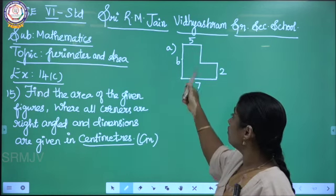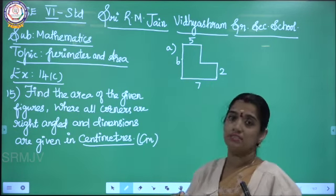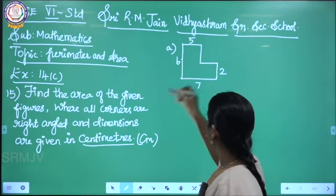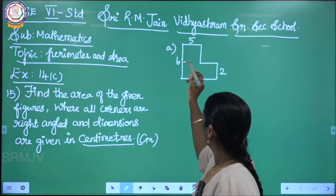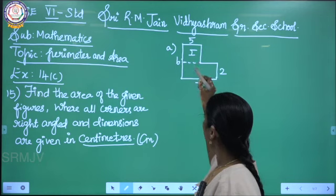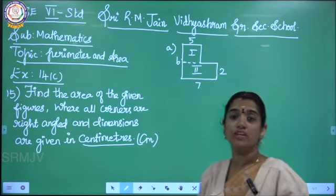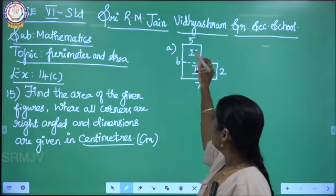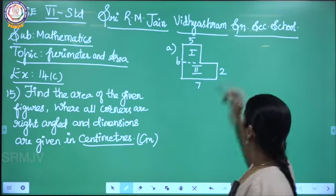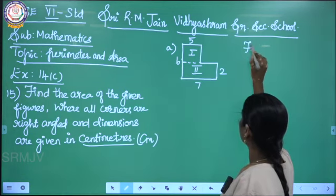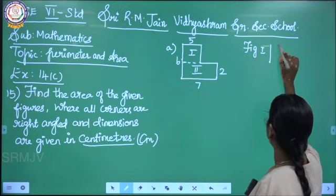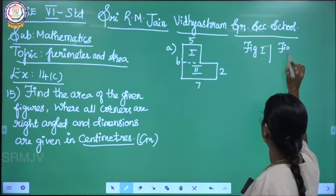I am going to find out the area for this figure. Just see this — I can join like this. So this is figure 1 and this is figure 2. If I join the line like this, I can get figure 1 as well as figure 2. Now for figure 1, I am going to write the length and the breadth, as well as for figure 2.